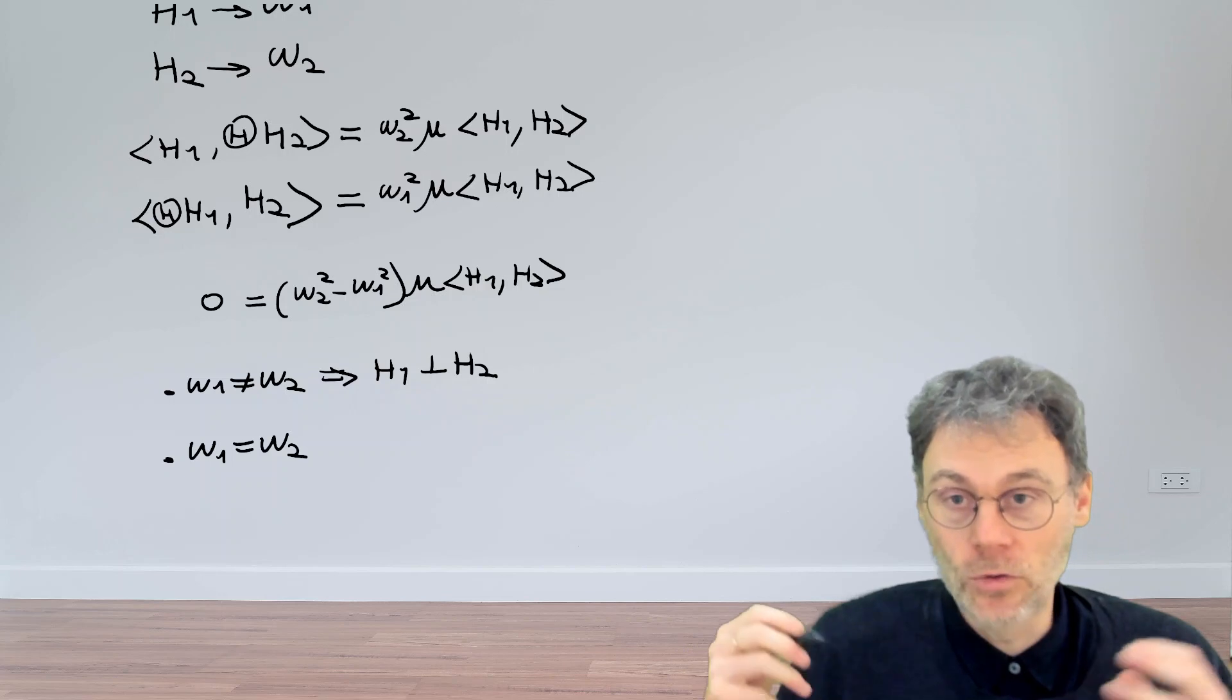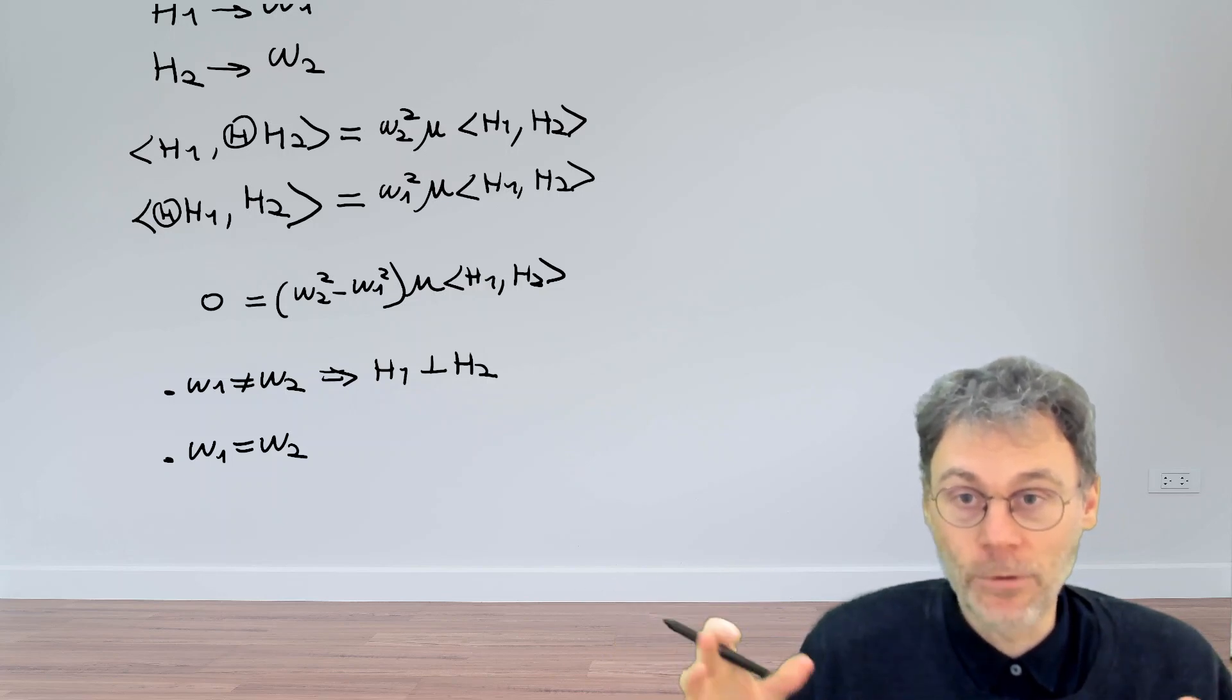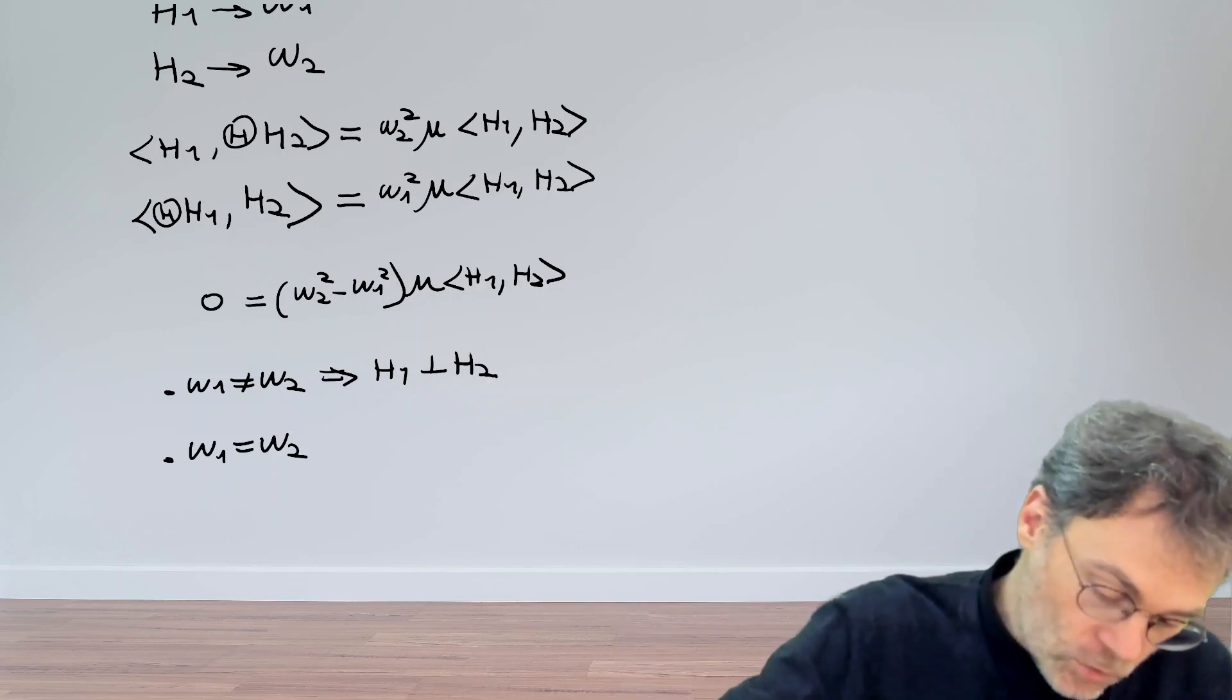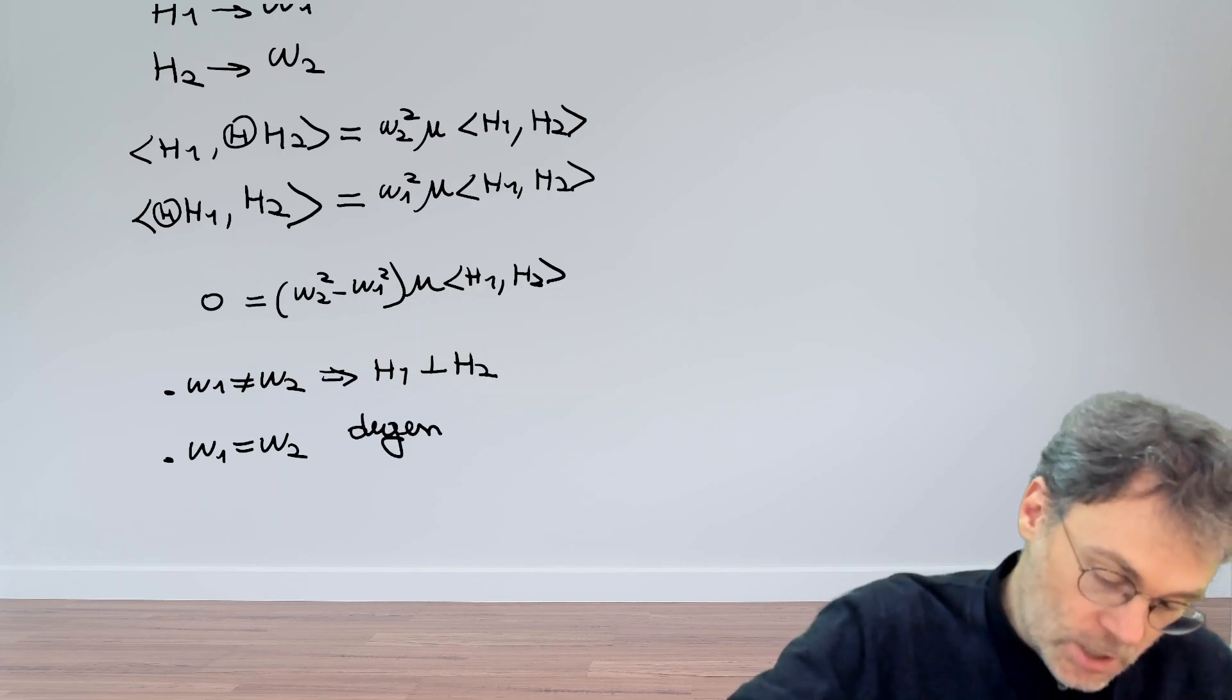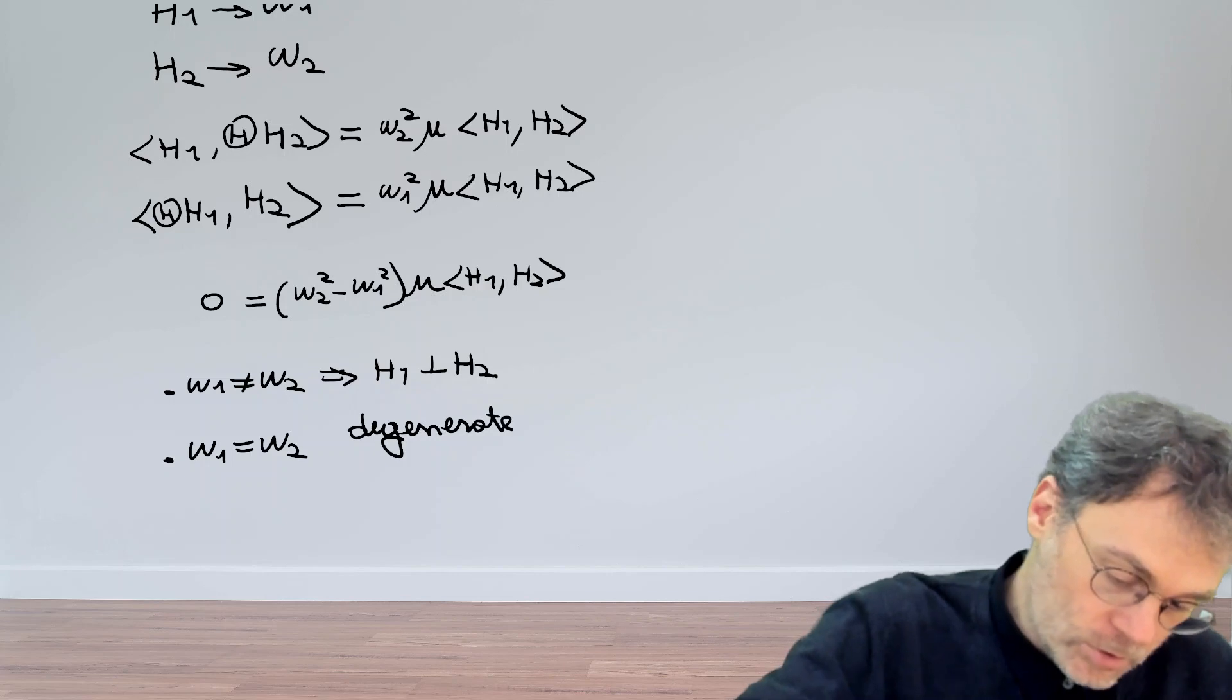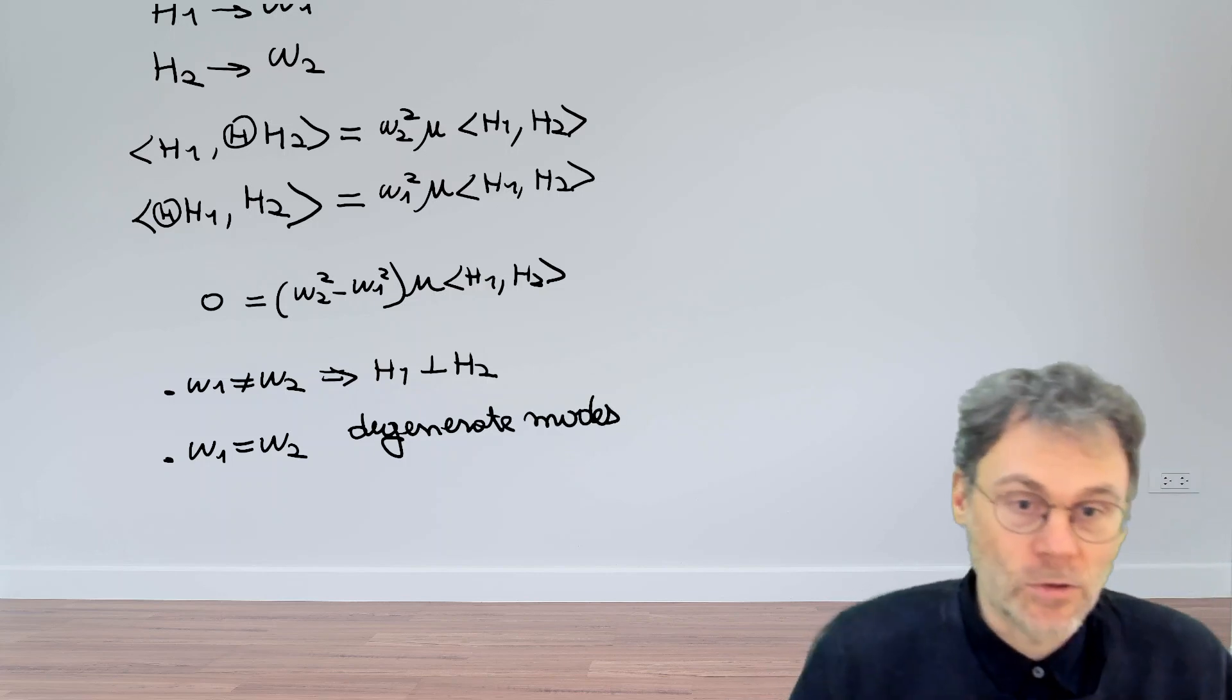By the way, the situation where two different eigenfunctions happen to have, by chance, the same eigenvalue, this is called degeneracy. So here we're dealing with so-called degenerate modes.